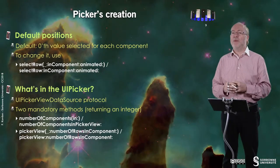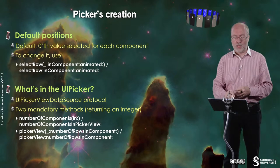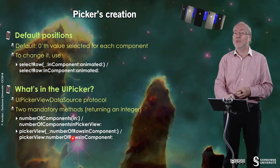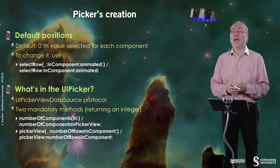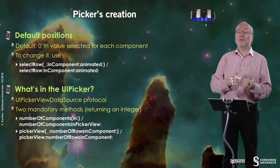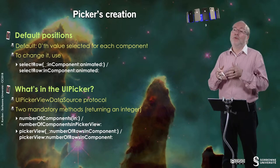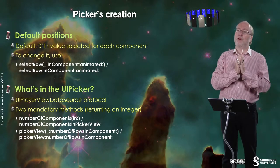The first protocol, UI Picker View Data Source, has two mandatory methods. Here are their names in Swift and Objective-C: the number of components in the Picker View, and the number of rows in a given component. The Picker View and the component number are provided as parameters. Each component and each row is numbered from zero.